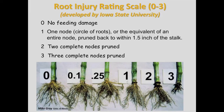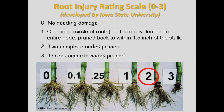For rating corn rootworm injury, we use the rating scale of 0 to 3 that was developed at Iowa State University. 0 means no injury; 1 means one complete node pruned to within one and a half inches of the stalk; 2 means two complete nodes pruned to within one and a half inches of the stalk; 3 means three complete nodes pruned to within one and a half inches of the stalk. This root injury rating scale correlates to the level of plant lodging and yield loss caused by corn rootworm.